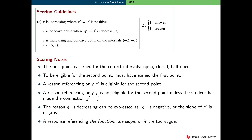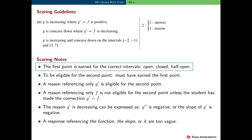Here are the scoring guidelines for Part C, worth two points: one point for the answer, which is the two intervals, and one point for the reason. The first point — the answer point — is earned for the correct intervals, both of them, and they can be reported as open, closed, or even half open. We won't worry about the endpoints, at least not in this problem.